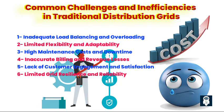Four: Inaccurate billing and revenue losses. Inaccurate meter readings and billing errors are common in traditional grids, leading to revenue losses for utility companies and dissatisfaction among customers. Billing disputes and delays constrain customer relationships and undermine trust in utility services.